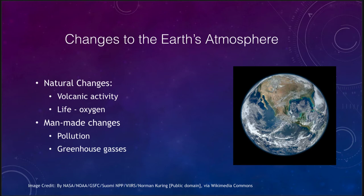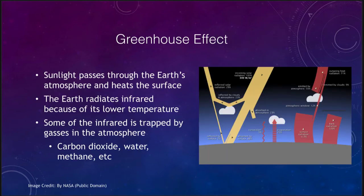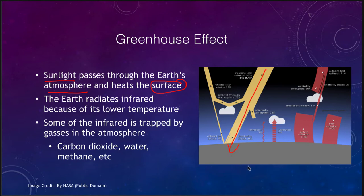Let's look a little bit at how the greenhouse effect works. When the greenhouse effect occurs, the sunlight passes through the earth's atmosphere and heats up the surface of the earth. You have incoming radiation from the sun and a certain percentage of that is absorbed by the earth's surface and then re-radiated back out. Now the earth does not re-radiate in the visible part of the spectrum — it re-radiates in the infrared.